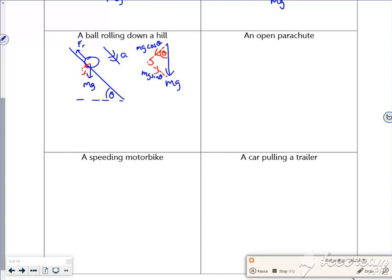Right, so it says an open parachute. So this person's falling with mg, so it's going down. And then we open the parachute so there's going to be a resistive force there going against them to slow them down.